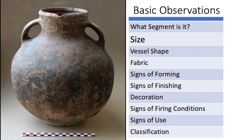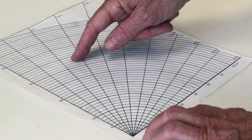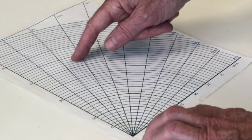If the segment is a rim or a base, we can use a diameter chart to get some sense of the vessel's overall size. The arcs on a diameter chart are spaced in increments of a half centimeter of radius, which is equivalent to one centimeter of diameter.